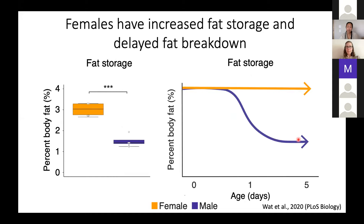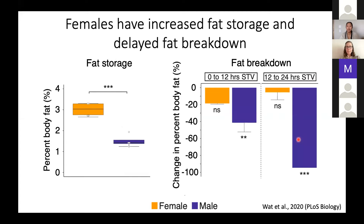The first thing we did was characterize sex differences in fat storage and fat breakdown in Drosophila. On fat storage graphs, orange represents females and purple-blue represents males. Females have increased body fat compared to males. This sex difference is created over the first five days of adult life: at day zero males and females have the same body fat, but over five days males significantly drop their percent body fat while females maintain theirs. This sex difference is maintained until at least 30 days of age.